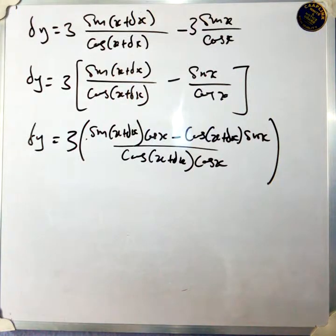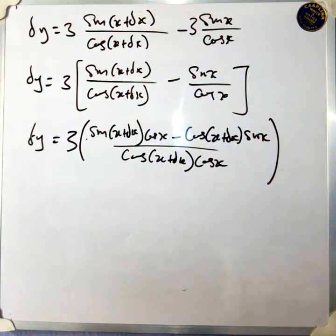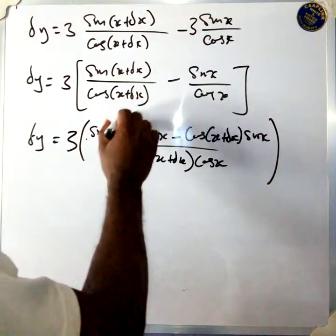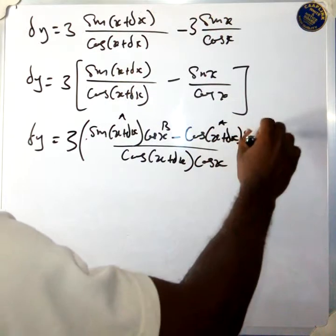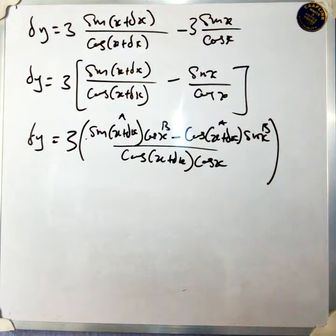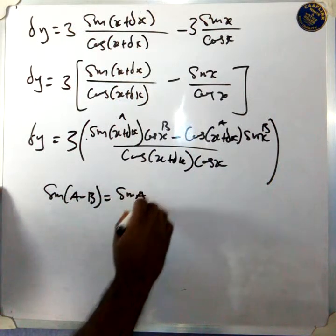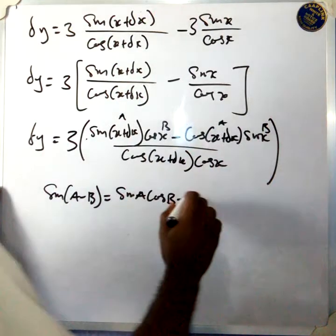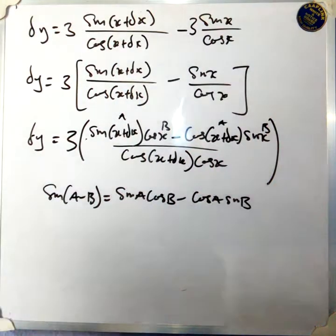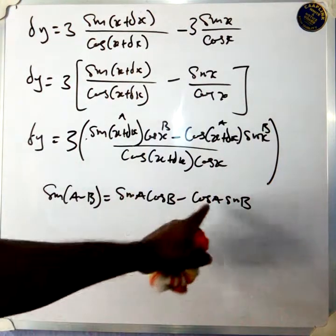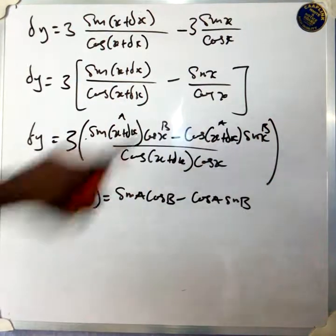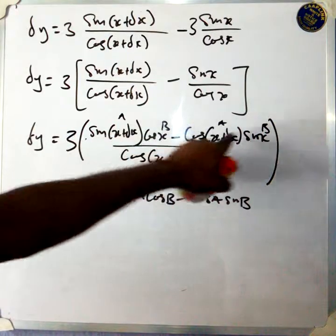Look at the numerator: sine(x plus delta x) times cos x, minus cos(x plus delta x) times sine x. Let A equal x plus delta x, and B equal x. You need to remember that sine(A minus B) equals sine A times cos B, minus cos A times sine B. So this expression equals sine(A minus B), and this is equal to sine of (x plus delta x minus x).